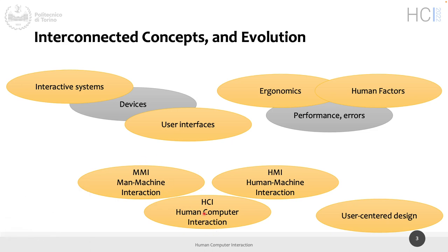Human-computer interaction means humans interacting with a computer — those are the two ends. In some fields related to computing, this is mostly called human-machine interaction. For example, people in robotics use human-machine interaction rather than human-computer interaction. Why machine versus computer? A machine could be any machine — it can have zero electronics, zero computer science — but you still have a lever to press or pull, and it's still a machine with a user interface.